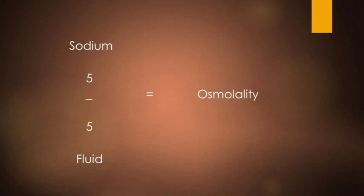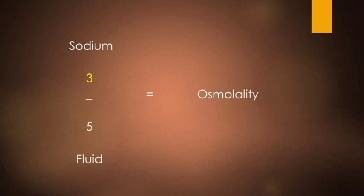But to be able to tell these three apart, you have to know something first — what the heck is osmolality? Osmolality simply is the number of dissolved particles in a fluid. Here we see a ratio of five sodium particles dissolved in five units of fluid. From our question, our patient had a decreased serum osmolality. There are two ways to get that: number one, you can increase the amount of fluid, which is the case in SIADH, where your body won't let you diurese, and thus the fluid increases.